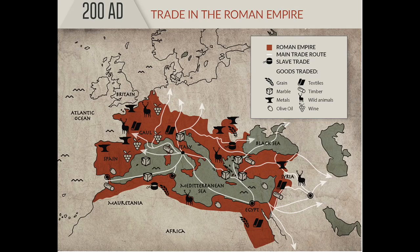In 200 AD, you can see the trade routes throughout Rome — the main trade routes, the slave trade routes. I would even argue there is almost a form of slavery today if you look at cheap labor. The routes reached the far reaches of the empire, even into southern Britain — just a far-reaching empire.